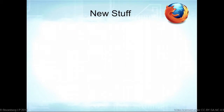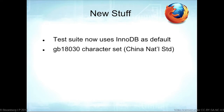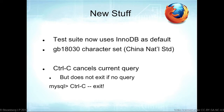Now for new stuff in MySQL 5.7. InnoDB is the default for the test suite — great. There's a new China National Standard character set, GB18030. Control-C behavior is changing: currently if there's no active query, Control-C exits the client. In 5.7 it will just sit there and do nothing, which is great because it prevents accidentally exiting when you hit Control-C instead of something else.